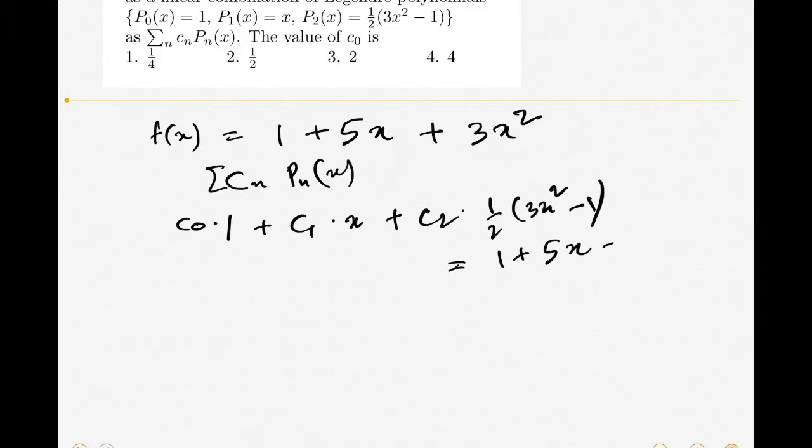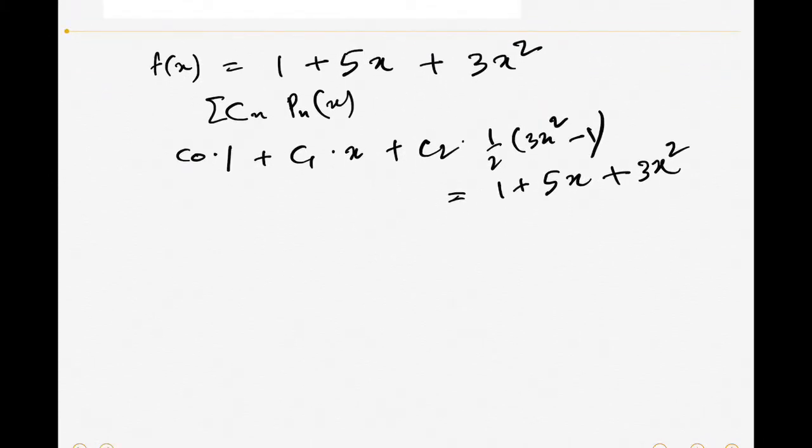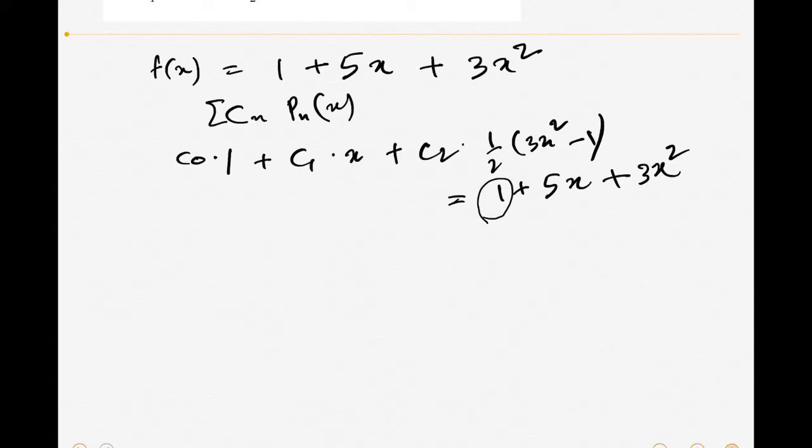We want to compute c₀ only now. How to find c₀? We can compare the constant terms on both sides. On the right side, the constant term is only 1, so we will compare this with the constant term on the left side.